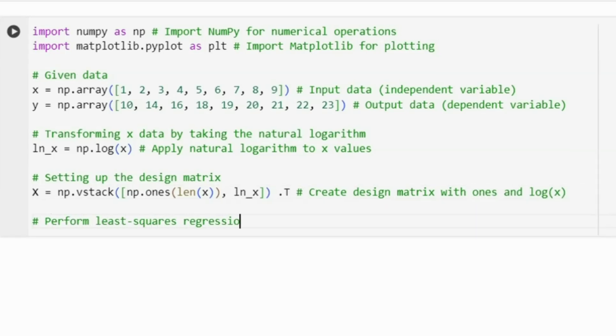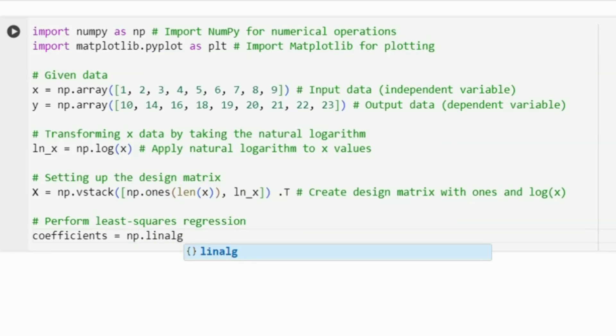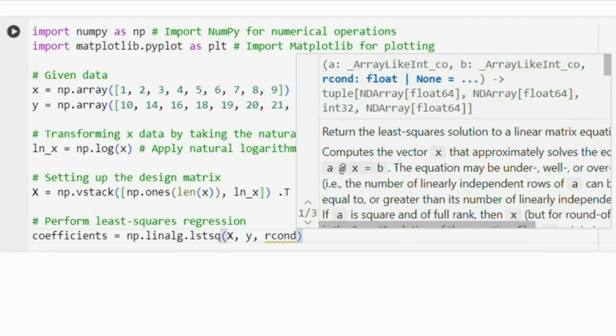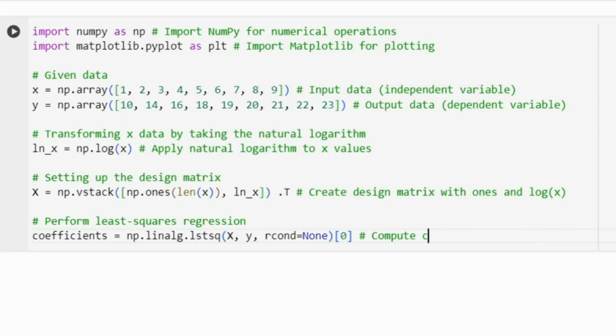Now, we will perform the least squares regression to find the best fit line. The np.linalg.lstsq function returns the coefficients of the regression line.